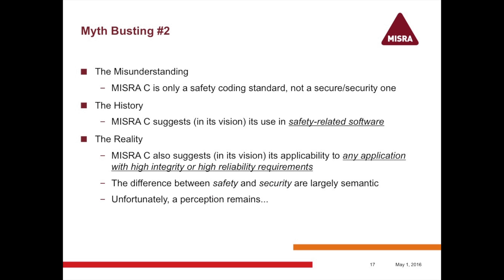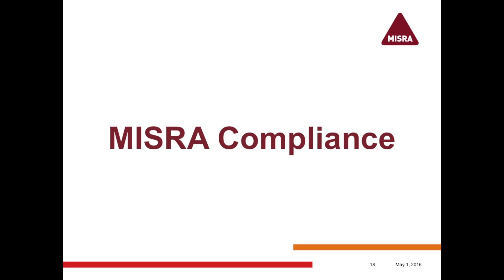The other misconception: MISRA C is a safety coding standard, not a security one. The vision does say safety — that's where we came from, the automotive world. But the vision also talks about any high-integrity, high-reliability system, safety or security. At the software level, that distinction is actually very, very subtle. Code that is safe is likely to be secure, and code that is secure is likely to be safe. At the system level there are philosophical debates — for example, should you patch a bug immediately for security, even though any update mechanism inherently makes the system less safe?